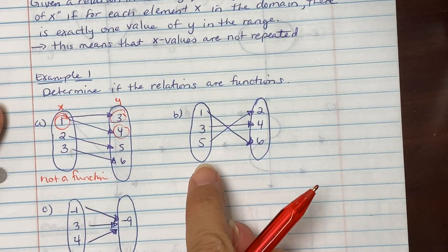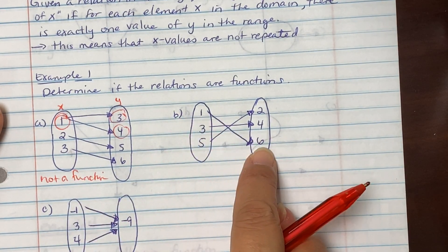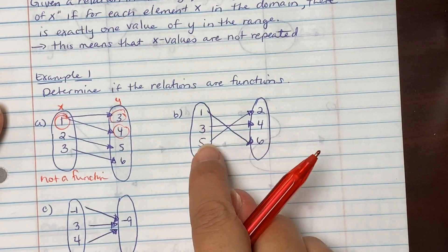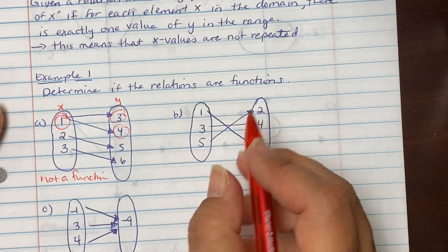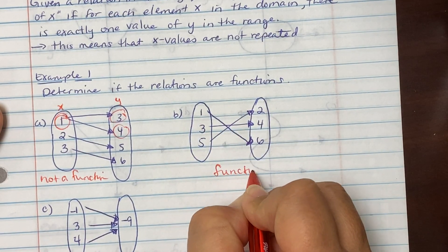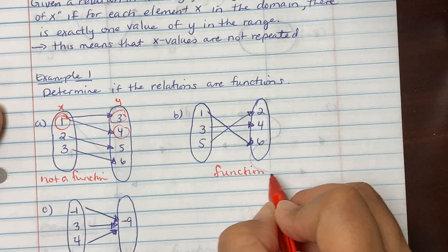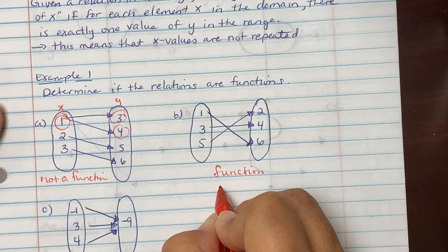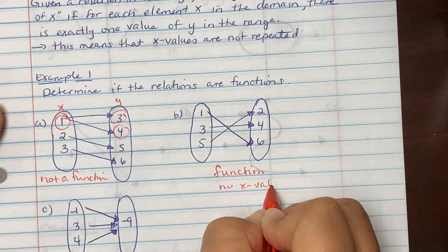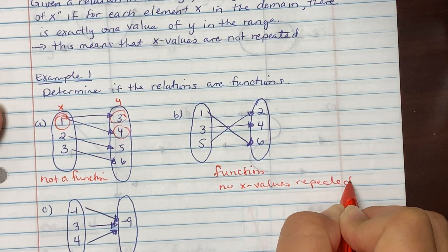When you go to b, the 1 went to the 6, the 3 went to the 4, the 5 went to the 2. No x's were repeated, so it's a function because no x values repeated.